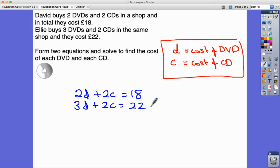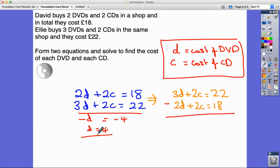Now I can see that I've got two matching terms in the middle here of the same sign, so I'm going to subtract. Actually looking at this, when I'm subtracting I know if I do two subtract three I'm going to get negative, so it doesn't matter in what order I subtract. I'm going to actually flip them around, make life easier and put the bigger of the two equations on the top. So I've got 3d plus 2c equals 22, then I'm going to subtract 2d plus 2c equals 18. 3d take away 2d is 1d, 2c subtract 2c is zero, and this is 22 minus 18 which is four. So I know that the cost of a DVD is £4.